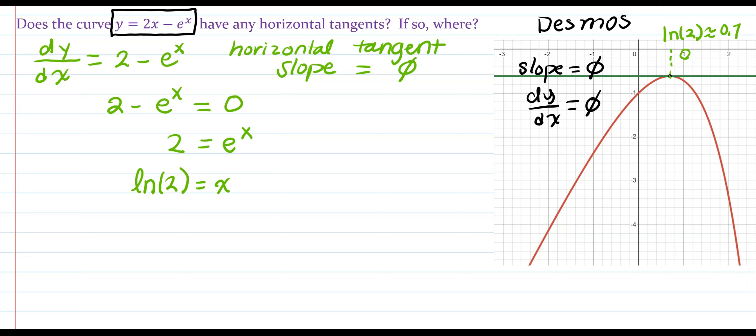Okay, now, so the question is asking, does it have any horizontal tangent line? And the answer is yes, the horizontal tangent line happens at x equal to ln of 2.